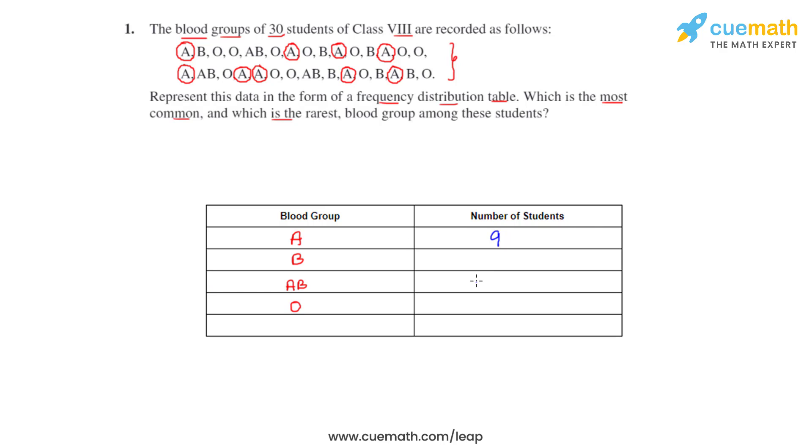Then let's find out the number of students who have got blood group B. So as we can see there are 6 students who have got blood group B.